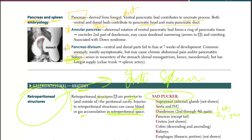There are two pathologies of the pancreas. First, annular pancreas: abnormal rotation of the ventral bud forms a ring of pancreatic tissue that encircles the second part of the duodenum, potentially causing duodenal narrowing and vomiting. It is associated with Down syndrome.